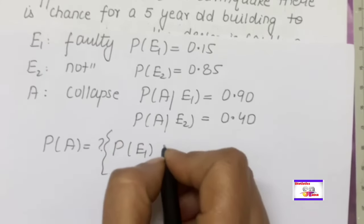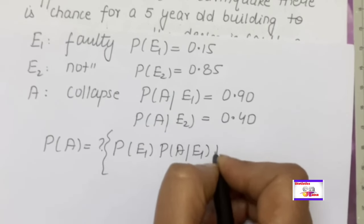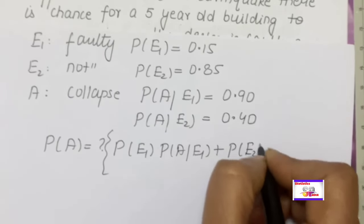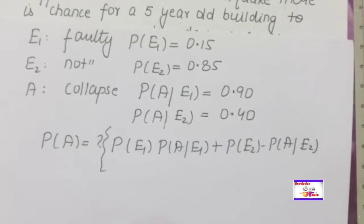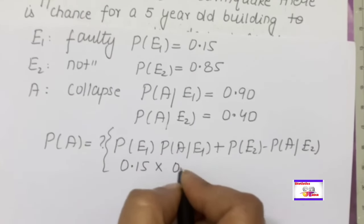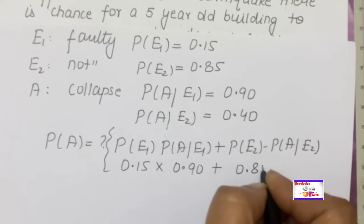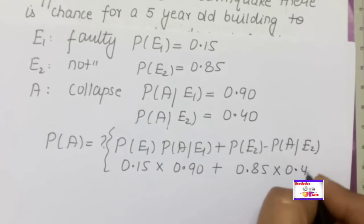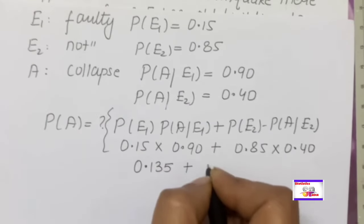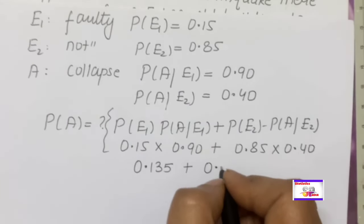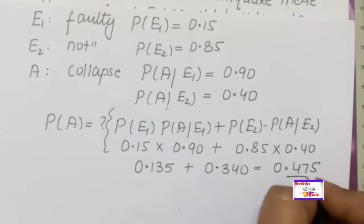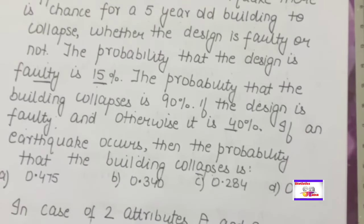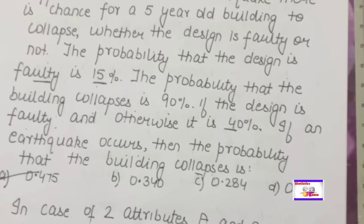P(A) = P(E1)·P(A|E1) + P(E2)·P(A|E2). It is very simple: multiply 0.15 by 0.90 and 0.85 by 0.40. That gives 0.135 + 0.340 = 0.475. So 0.475 is the answer for this question. We solved it using the total probability rule (Bayes' rule).